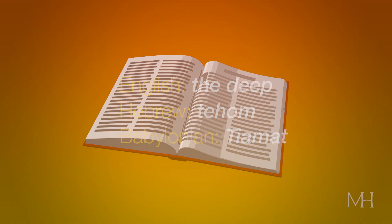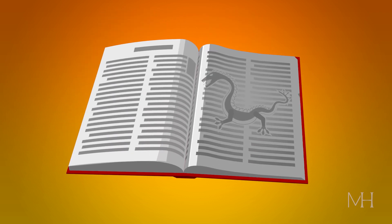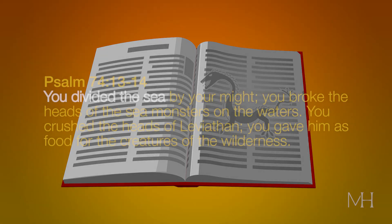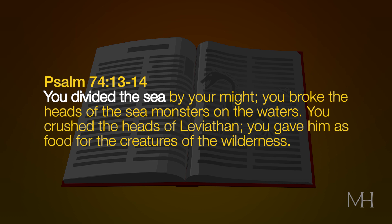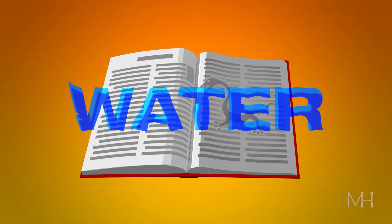This isn't the only place foreign sea monsters show up in the Bible in a creation context. Psalm 74 describes God creating the world, and in the middle of the description we find this: 'You divided the sea by your might. You broke the heads of the sea monsters on the waters. You crushed the heads of Leviathan. You gave him as food for the creatures of the wilderness. Yours is the day, yours also the night. You have established the heavenly lights and the sun.' This passage has God destroying sea monsters by dividing the chaotic waters.